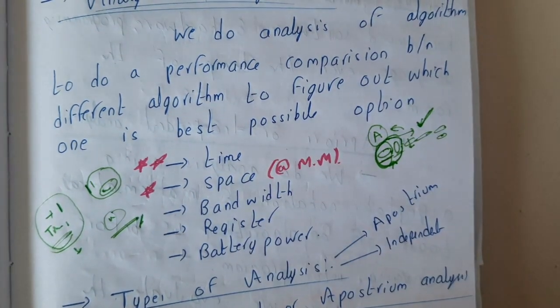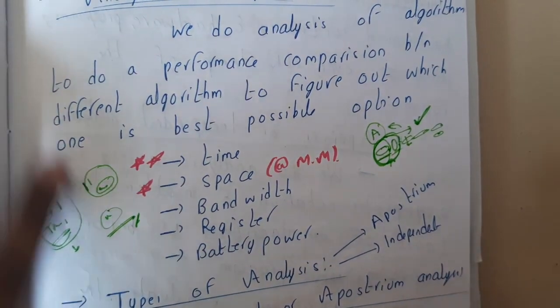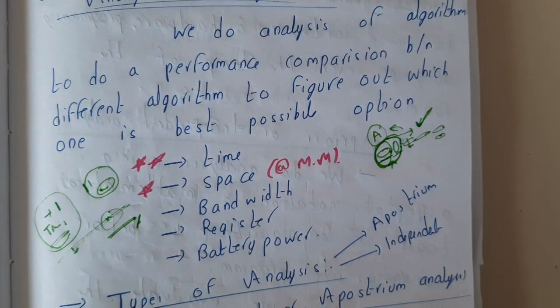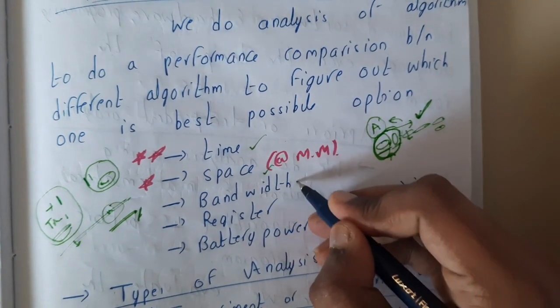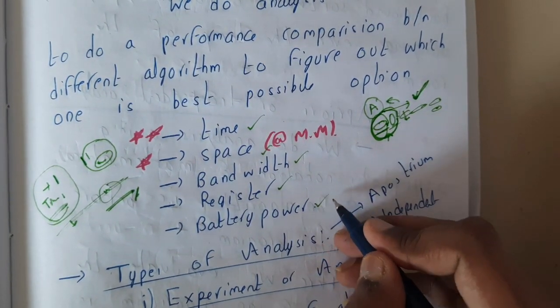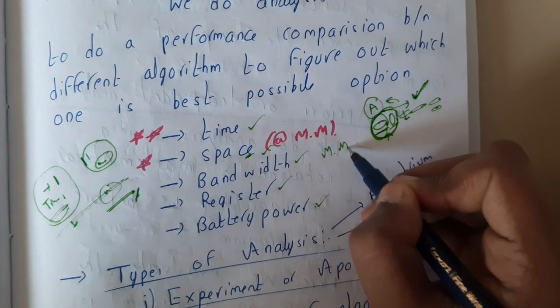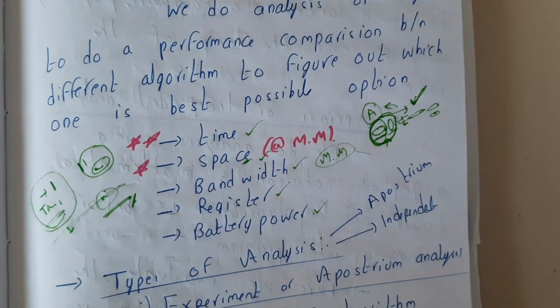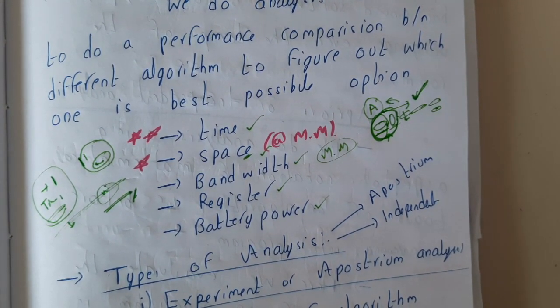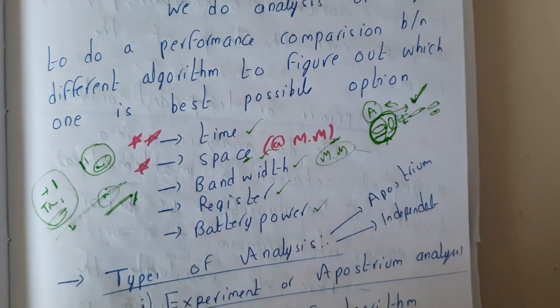This is just the analysis. Basically, to decide which algorithm is doing best, we will be doing the analysis with respect to time, speed, bandwidth, registers, and power consumption or power usage. Space is nothing but the main memory space. Please don't consider that I am having a 1TB hard disk - that doesn't come under space. When a program is running, it will be running in the main memory, so you need to consider the main memory only as the space.